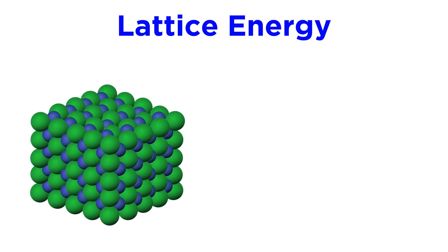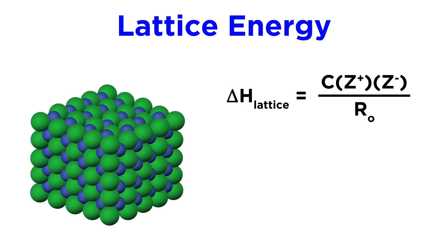To start, let's talk a little bit about lattice energy. Lattice energy is calculated this way: we have a constant C, and then we have Z⁺ and Z⁻ — those are the charges on the ions. So if we have plus one and minus one, plus two and minus two, et cetera, that's where the charges go.